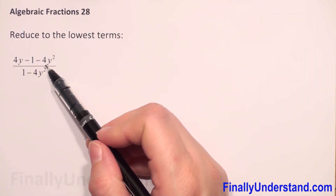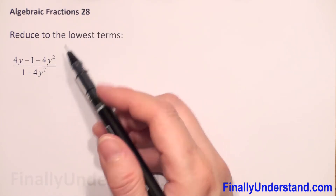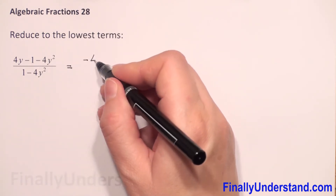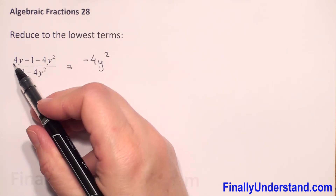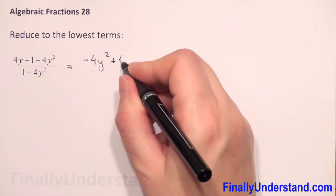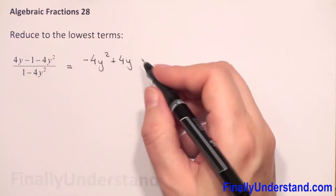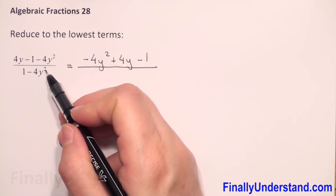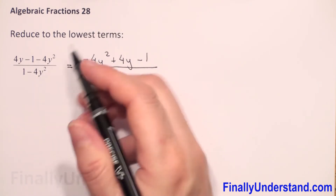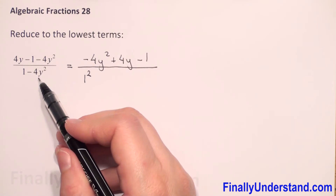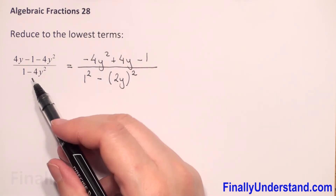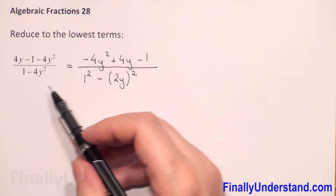First we will organize our numerator. The higher expression with y is y squared, so we will have negative 4y squared. Next we have invisible positive 4y and negative 1, so in the numerator we have 1 minus 4y squared. We can rewrite this as 1 to the second power minus 2y to the second power, which is 4y squared.